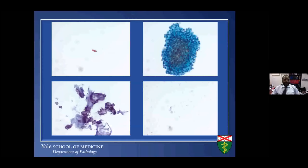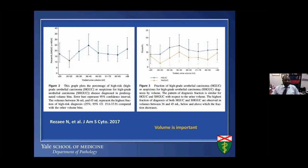This graph is from a study done about three years ago by Rizai and co-workers. They found that the percentage of high-grade or suspicious urothelial carcinoma actually depends on the volume of urine received at the time of performing the test. The volume bracket between 36 and 45 mL represented the highest fraction of positive diagnoses. So the volume is very important.